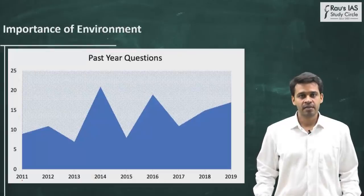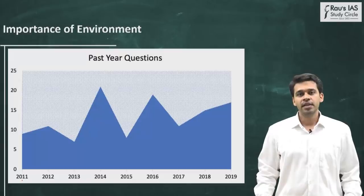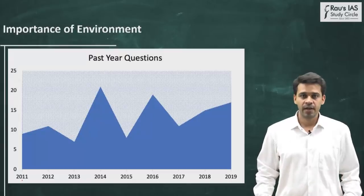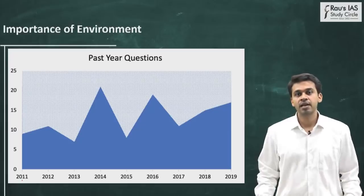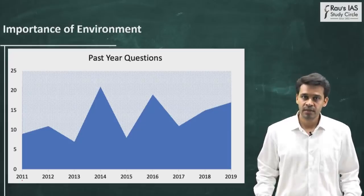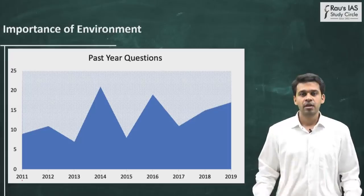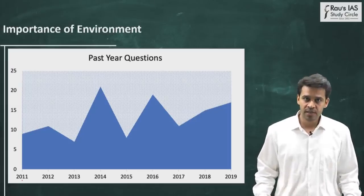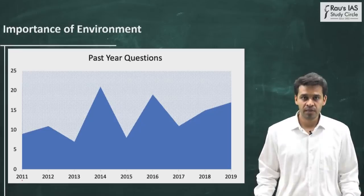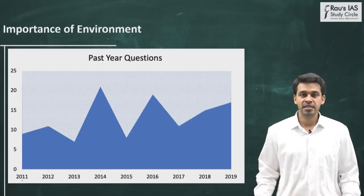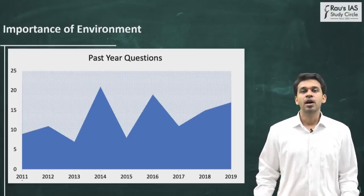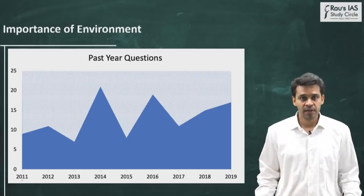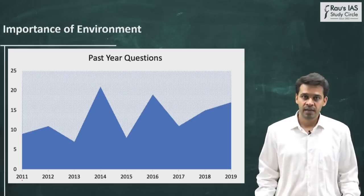As far as questions from past years are concerned, the graph on your screen shows the significance of environment. Anywhere from 10 to up to 25 questions have been asked out of 100 in UPSC Civil Services Prelims examination since 2012. There is a fluctuation in the number of questions asked, but it has never gone below 10 and can go up to 20 or even 25. Covering environment exhaustively becomes your first task for prelims.